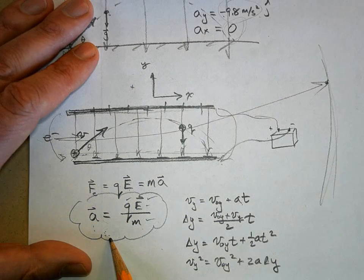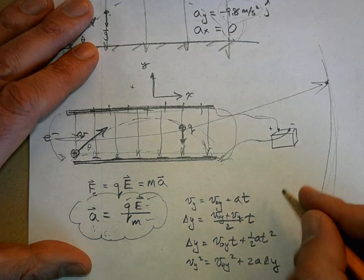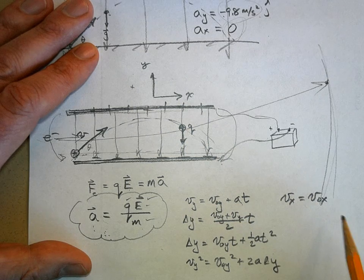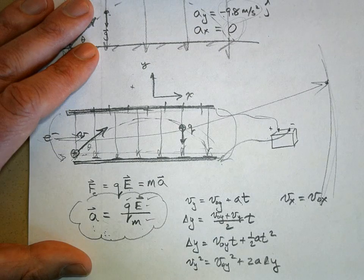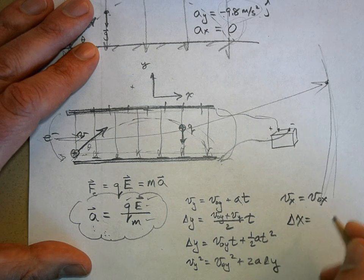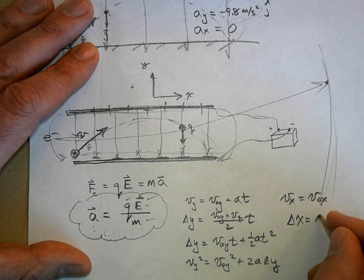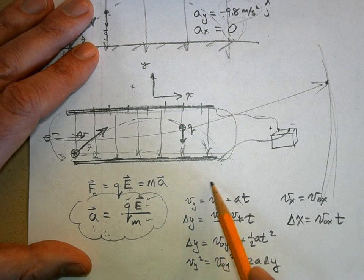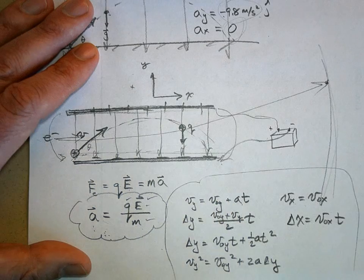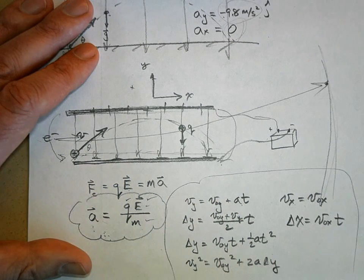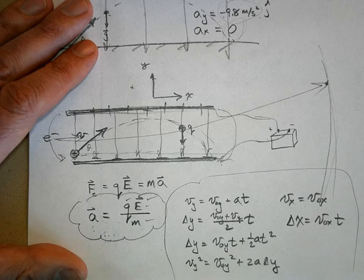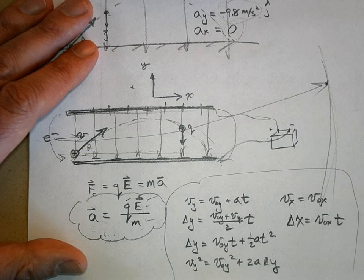In the x direction, v_x equals v₀x - the velocity in the x direction is constant. And delta x equals v₀x times t. These are the same kinematic equations we used for projectile motion. Now you're applying them to a charged particle, with the source of the acceleration being the electric field. Good luck.